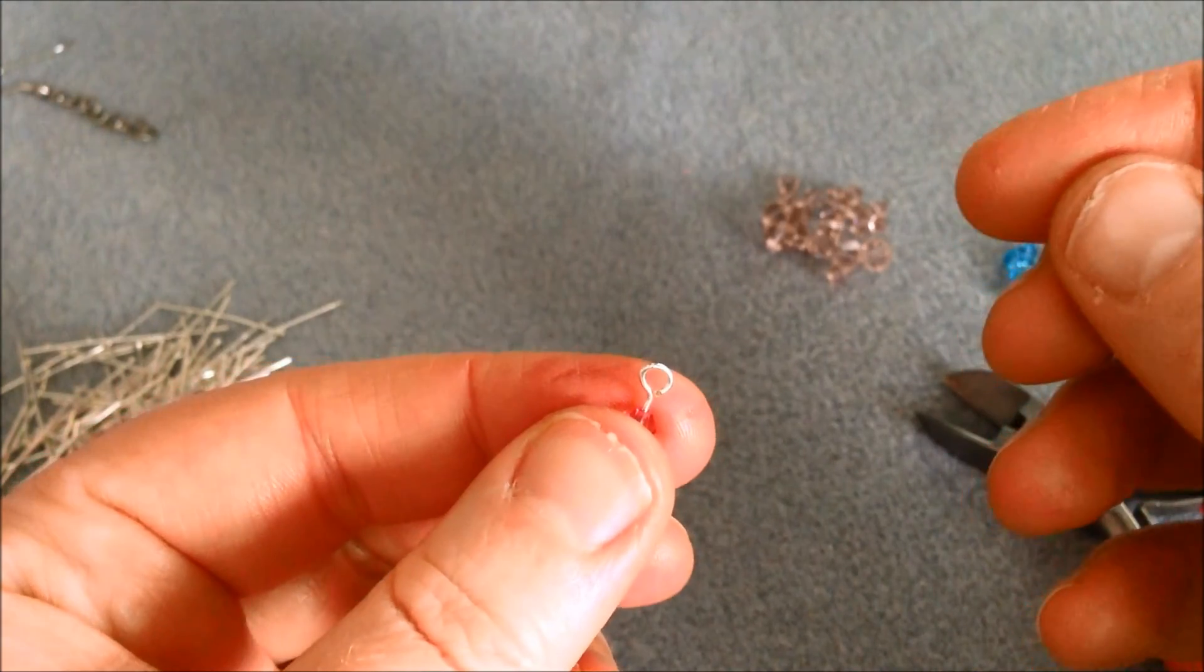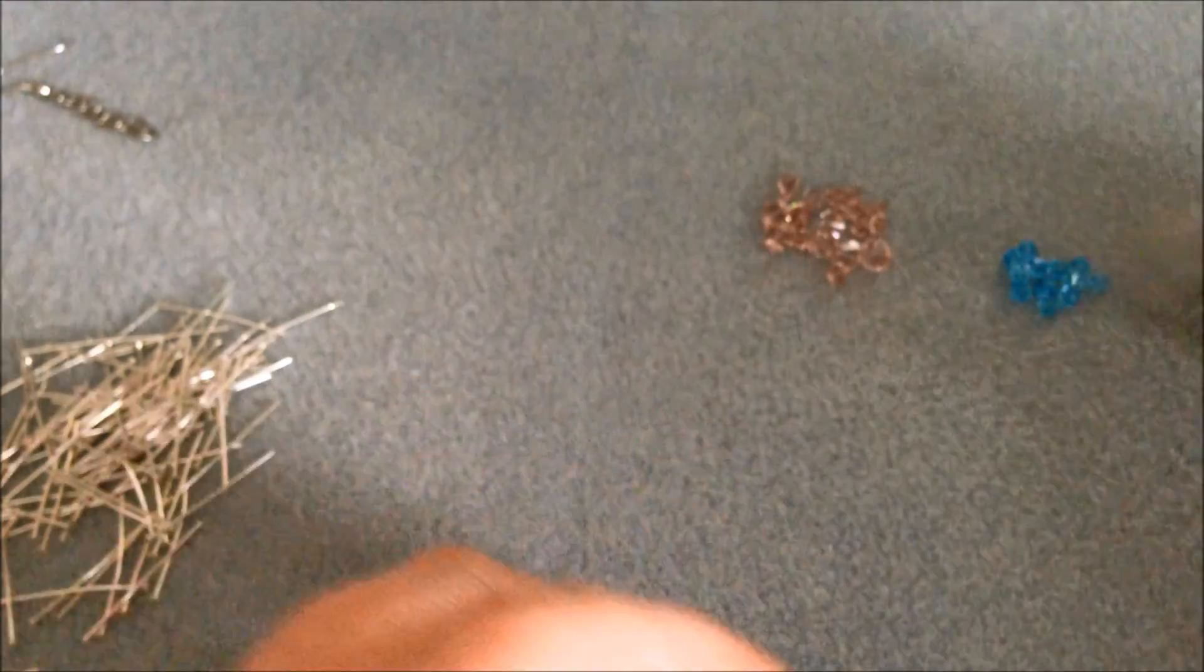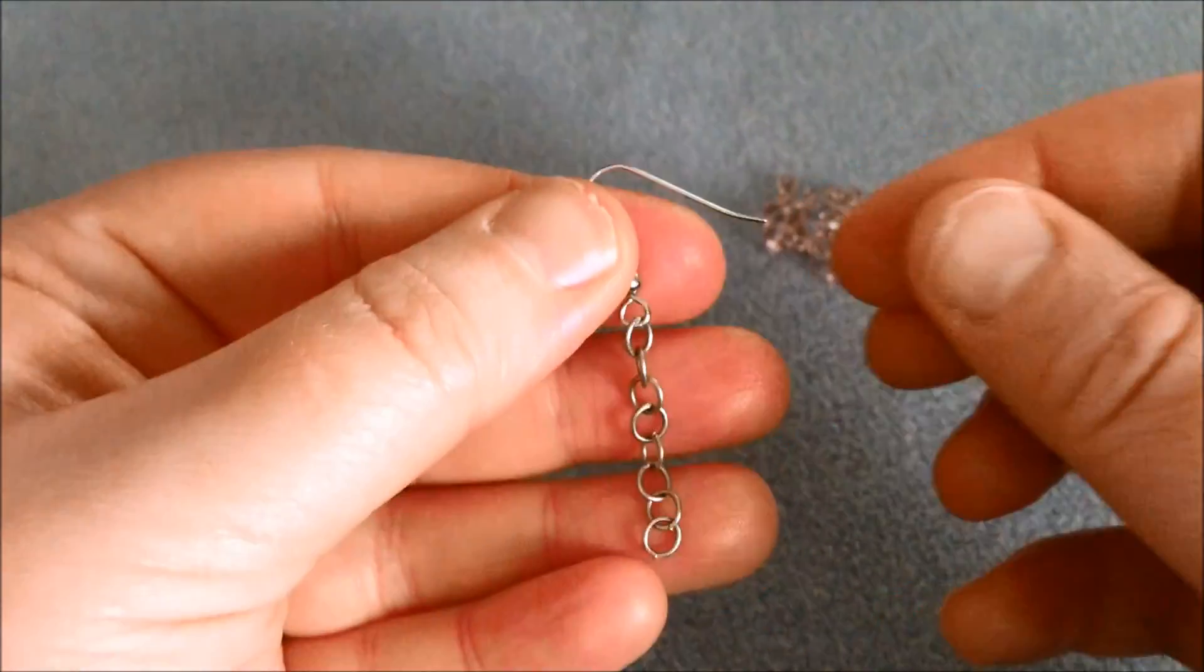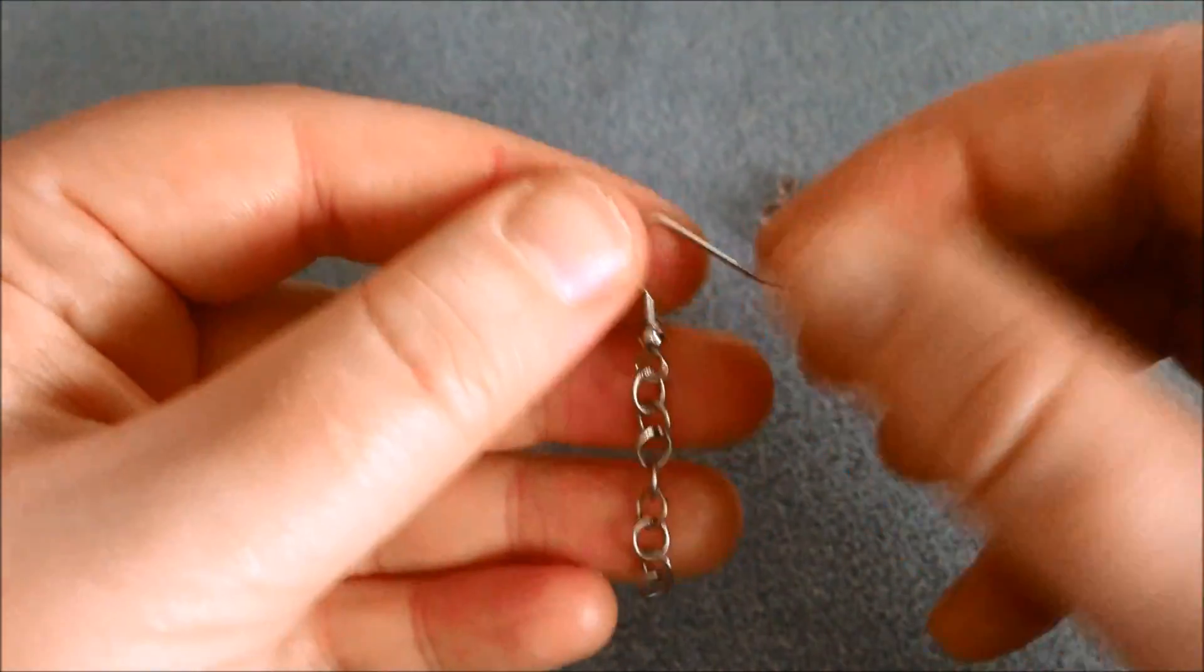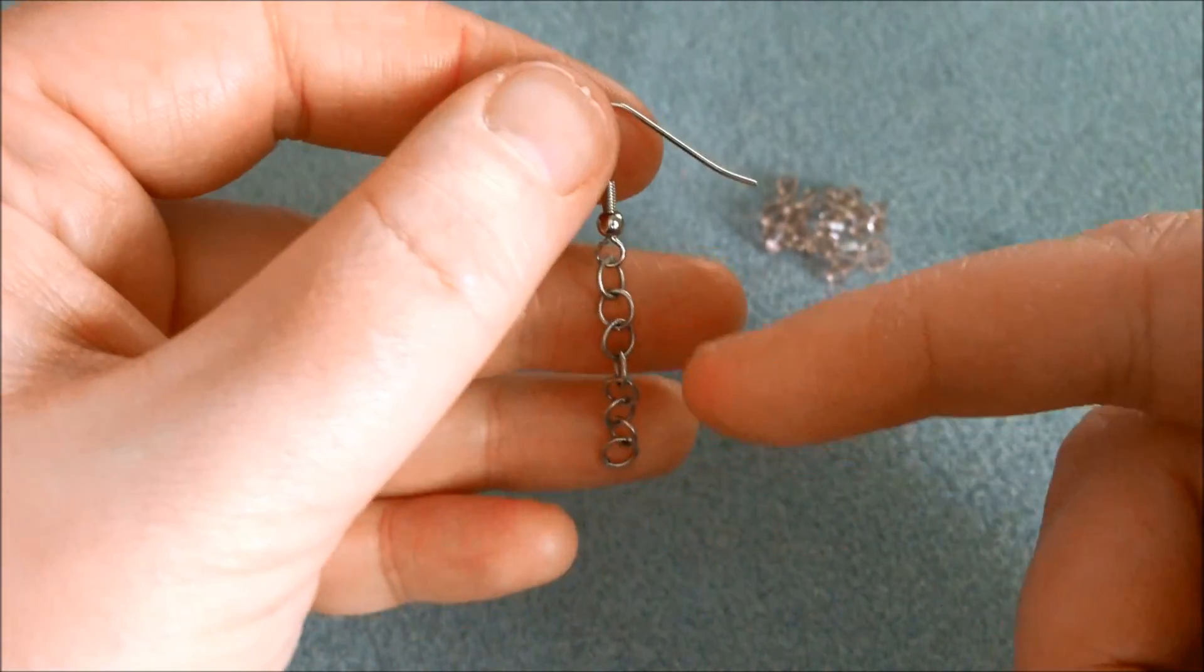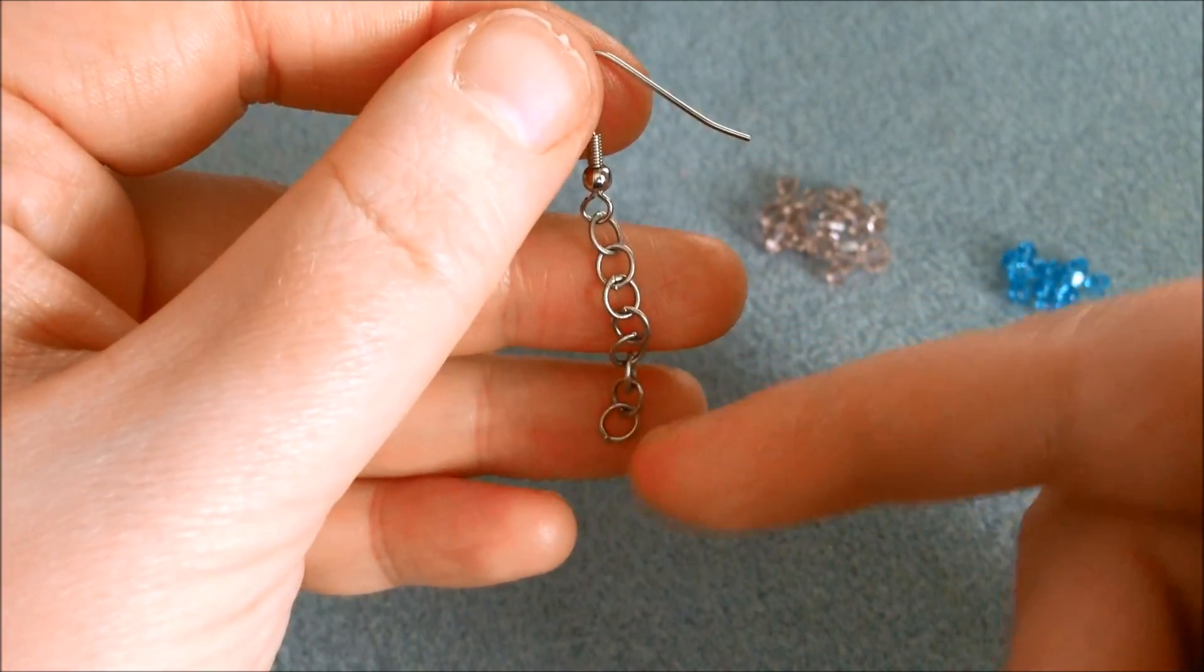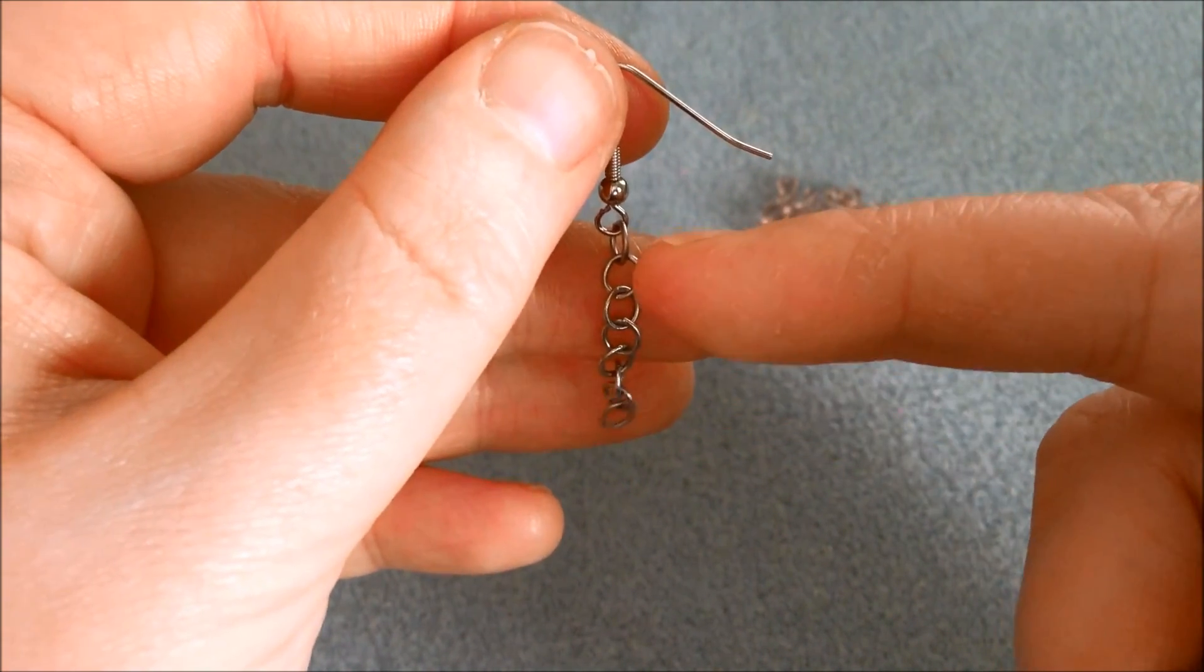So there it is and next of course you will need to attach this to your chain. Let me take my other piece of earring here. Now when you are attaching these make sure that you attach them evenly on the chain so you will have to make sure that you attach something onto each of these loops.